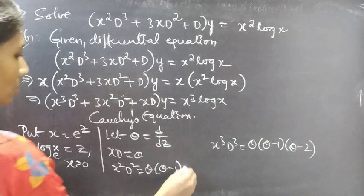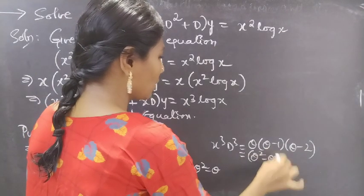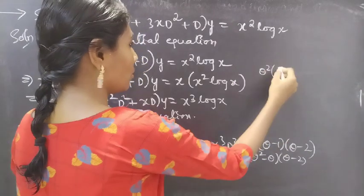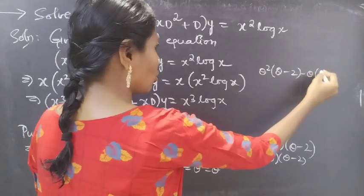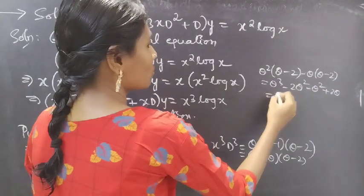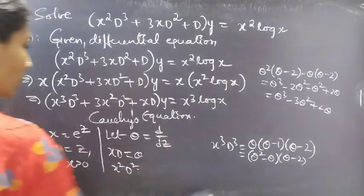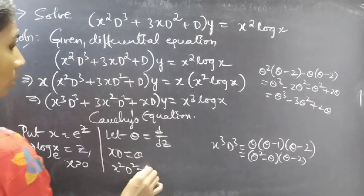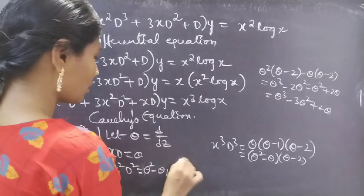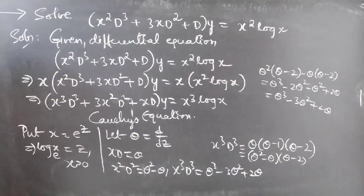Then xD is theta and x squared D squared is theta(theta minus 1) which is theta squared minus theta. Now let's find x cubed D cubed. This equals theta(theta minus 1)(theta minus 2), which expands to theta cubed minus 3 theta squared plus 2 theta. So x squared D squared equals theta squared minus theta and x cubed D cubed equals theta cubed minus 3 theta squared plus 2 theta.